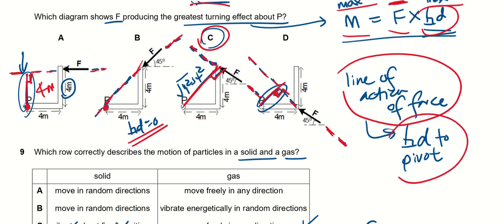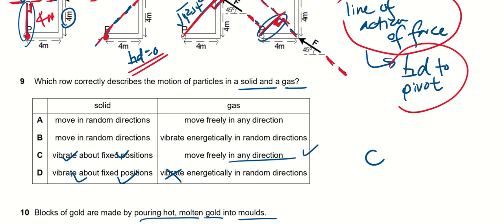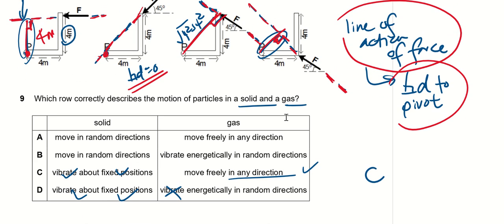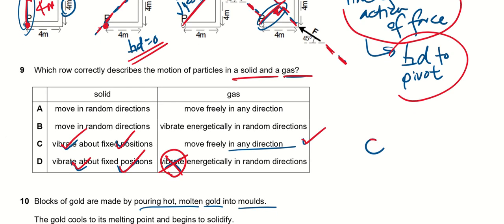Question nine: which row correctly shows the motion of the particles in a solid and a liquid and a gas? For solid, it is vibrate about fixed position. For gas, it moves freely in any direction. This is correct. Vibrate is only for solid, so answer is C.